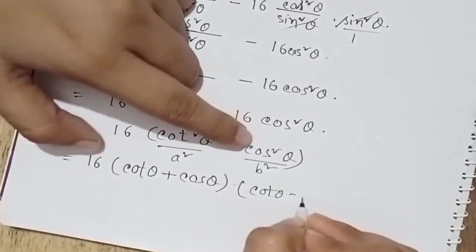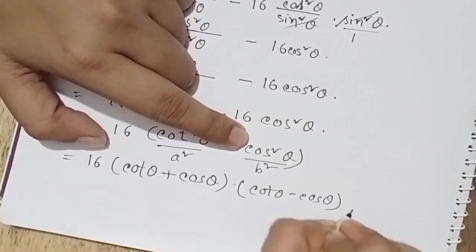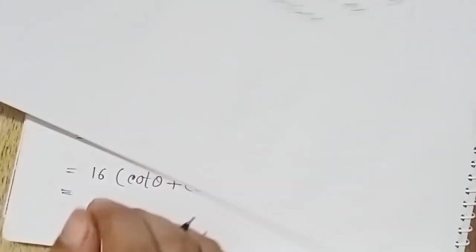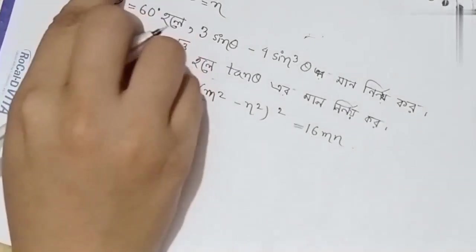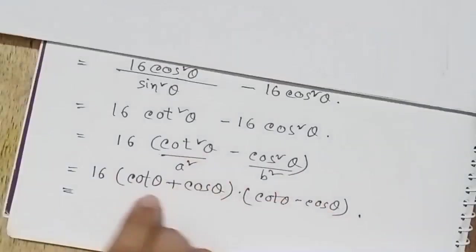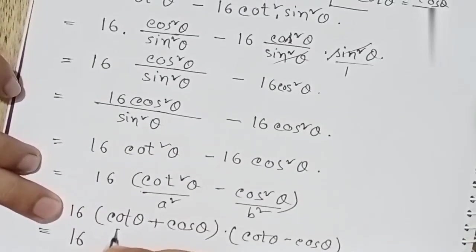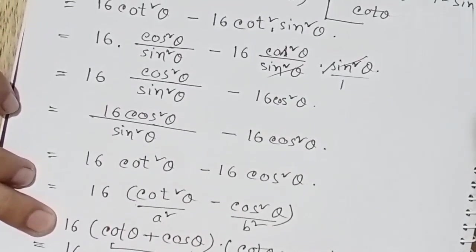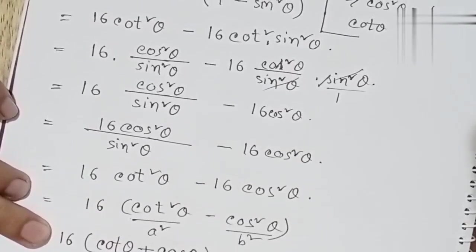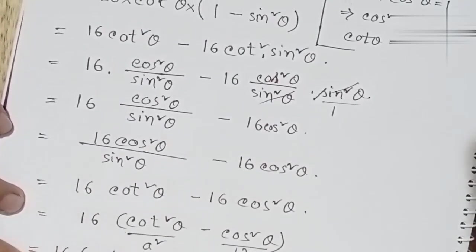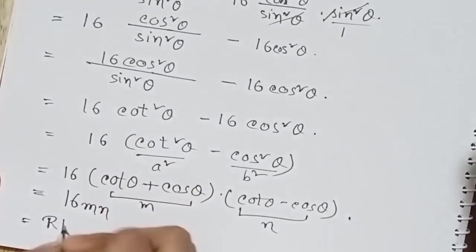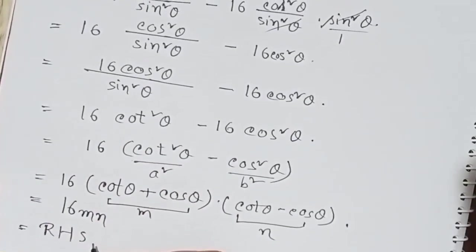Greater, minus cos theta. Adding: cos theta plus cos theta equals, same as adding. Cos theta equal to n times. x to right hand side, prove.